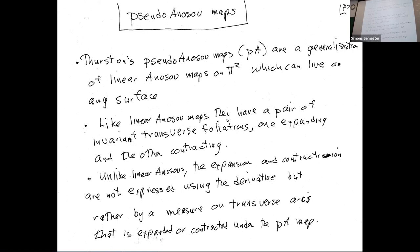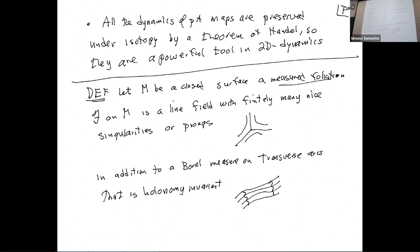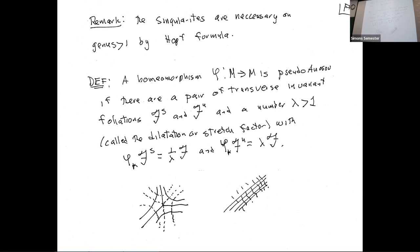Pseudo-Anosov maps are a generalization of linear Anosov maps. They have a pair of transverse invariant foliations. The difference is you don't use the derivative for hyperbolicity — you use a measure on transverse arcs. You have singularities because you're on other surfaces. The transverse measure is holonomy-invariant. The definition of pseudo-Anosov is: a pair of transverse invariant foliations with a number lambda such that the stable foliation is contracted and the unstable is expanded.